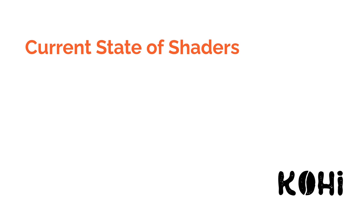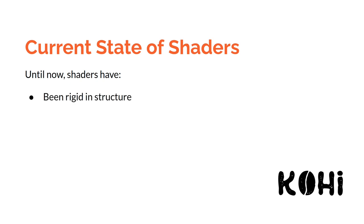Before we jump in, I want to talk about the current state of shaders. Until now, shaders have been super rigid in structure and they've also made lots of assumptions. These are a couple of major things that we want to fix, because in order to have a shader system that is capable of expanding upon and flexible, some of these things are going to have to change. We did some of these things just to get stuff up and running, but now it's time to revisit this and make it a lot better.